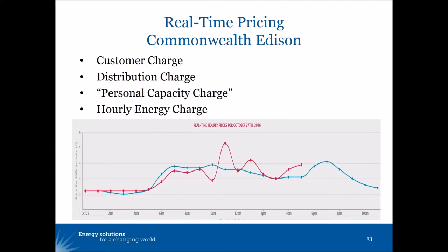The last example of a time of use rate is a real-time pricing rate, where the price that the customer pays for energy varies hourly based on wholesale energy market costs. The customer still has a monthly charge and pays a delivery charge for energy, but the hourly energy charge reflects what's happening in wholesale markets and can change throughout the day and throughout the year in unpredictable ways.